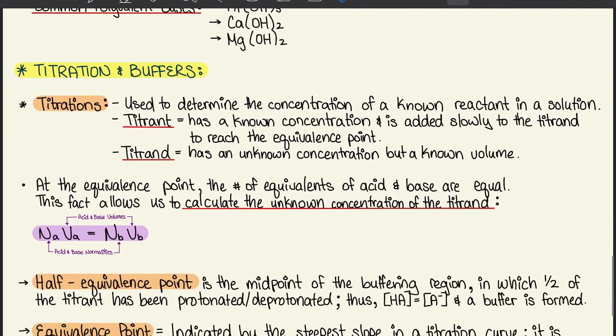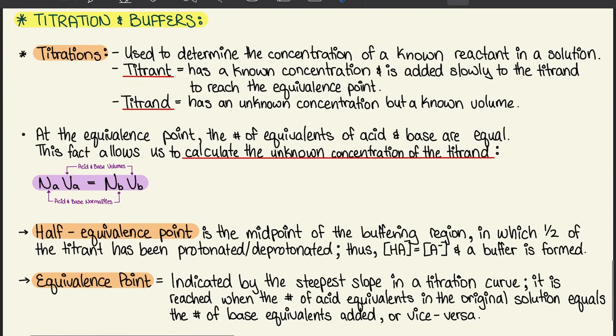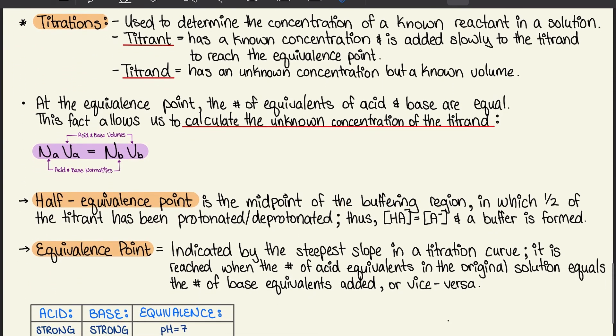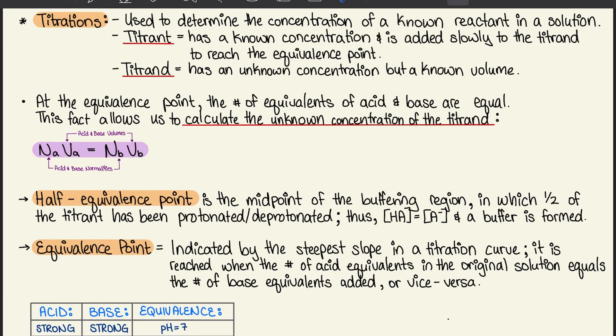Moving on to 10.4, we're going to talk about titration and buffers. Titrations are used to determine the concentration of a known reactant in a solution. A titrant has a known concentration and is added slowly to the titrand to reach the equivalence point. A titrand has an unknown concentration but a known volume.